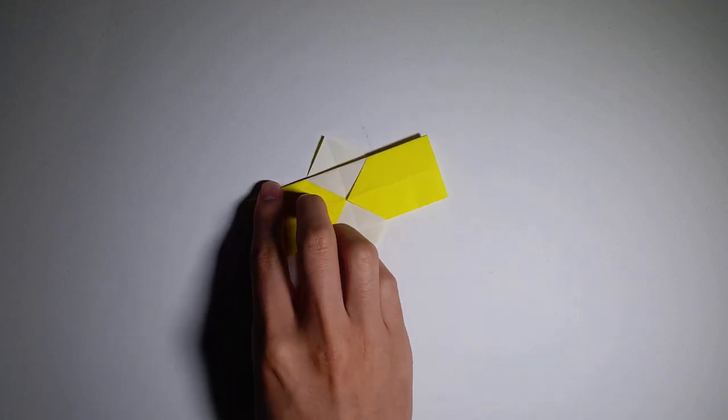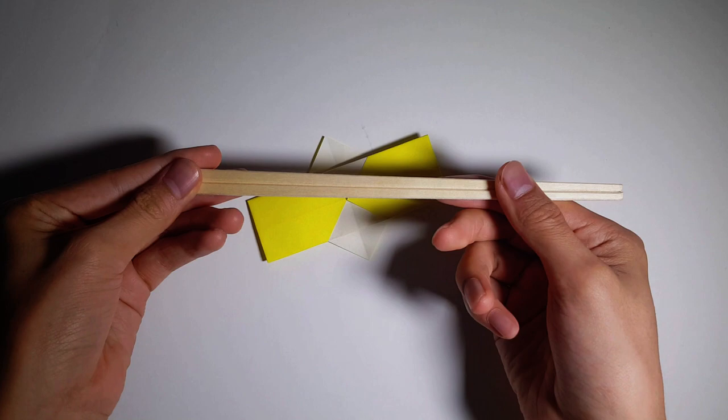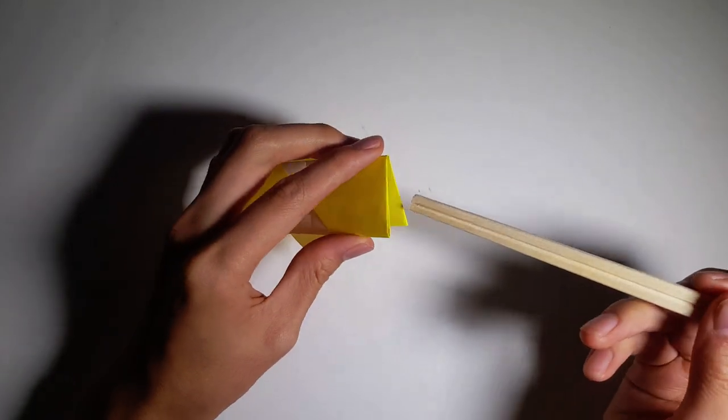Chopstick holder number two. Except this one, you slide it through the middle. So instead of it stopping at the end, you just open it off.